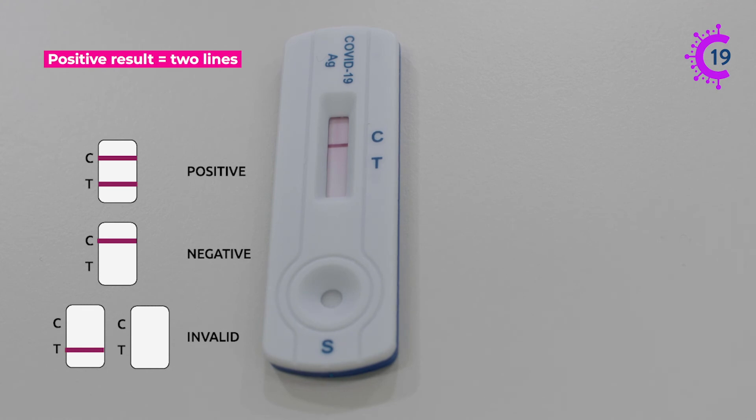After 15 minutes your cassette should show a result. There should always be a line visible by the C for control. If this is not present it's best to repeat the test using a fresh kit.